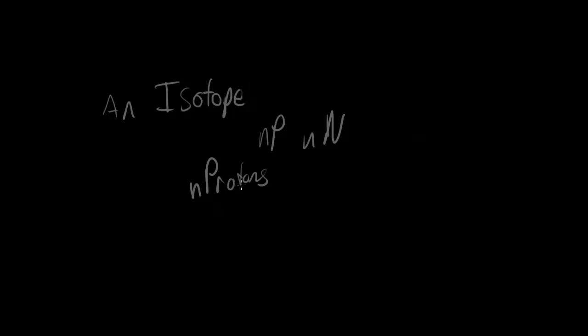Isotopes are atoms of the same element but with a changed number of neutrons. We know that the number of neutrons affects the mass number because the mass number is found by adding the number of protons to the number of neutrons. So we can also say an isotope is an atom of the same element with a different mass number. By saying 'same element' we are already implying the same number of protons.